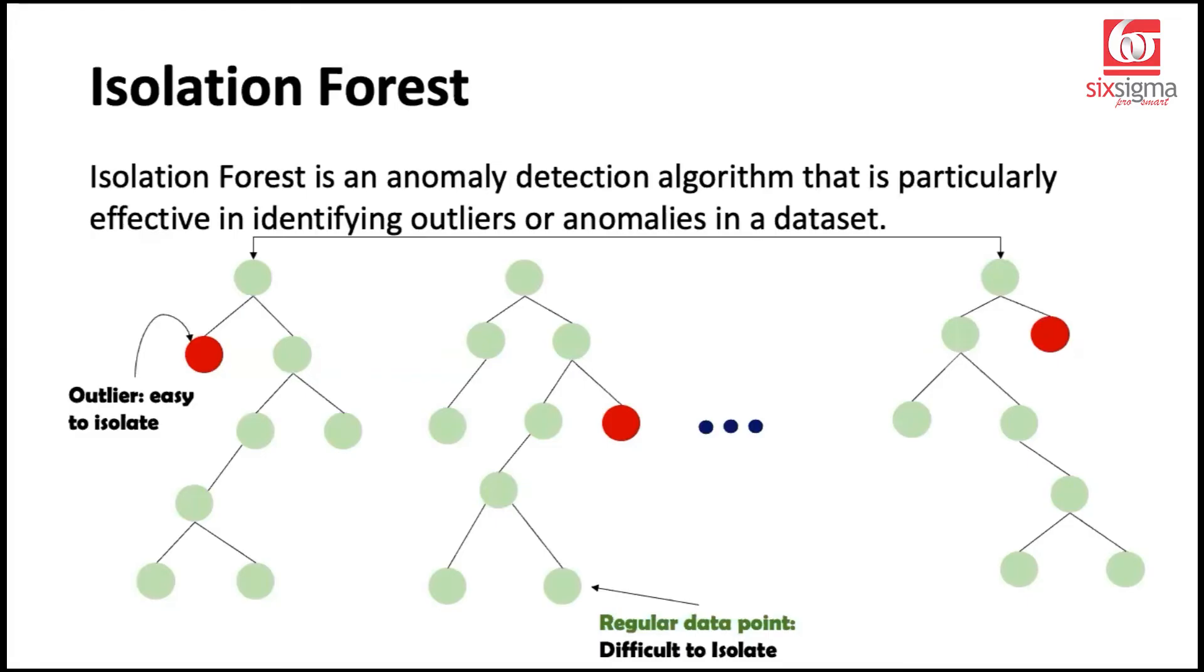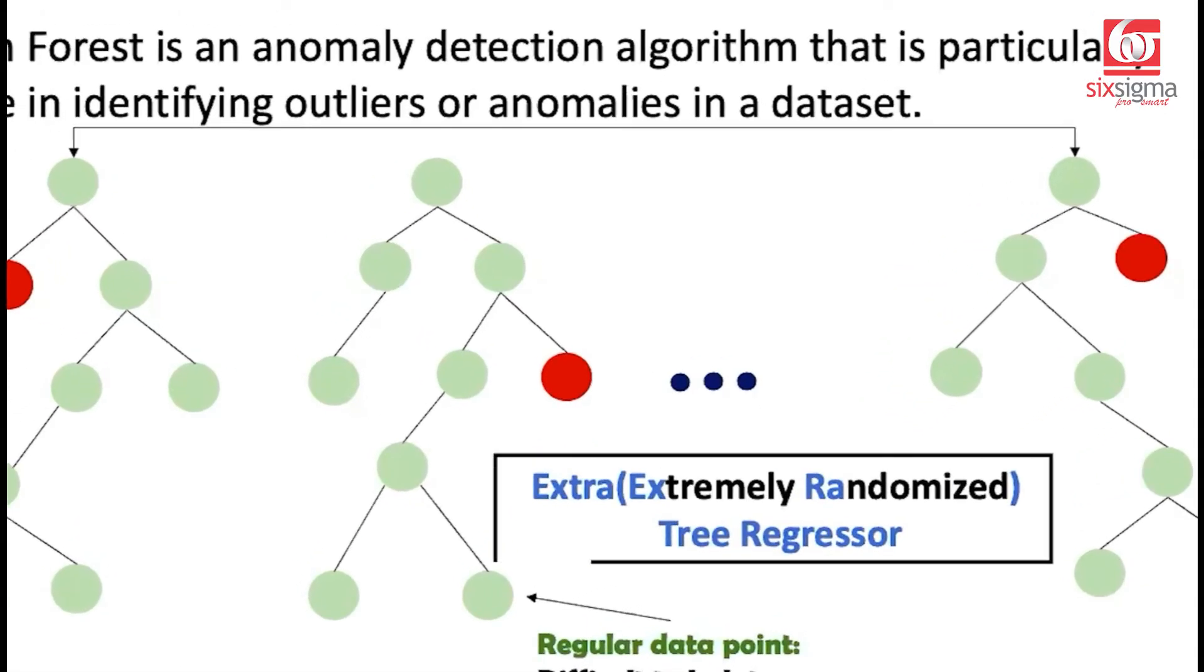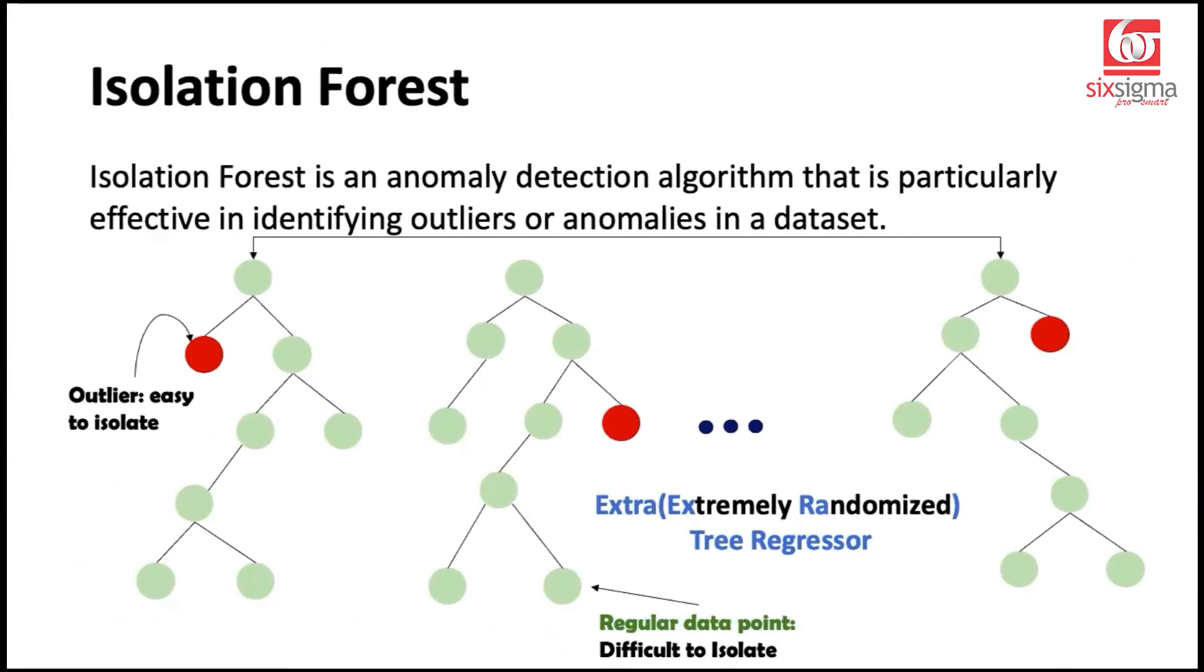Now I said there is a subtle difference between the kind of trees that you see here and the typical decision trees. The tree that we use in case of isolation forest is known as the extra tree regressor. Extra here stands for extremely randomized. Just as in case of a normal decision tree, we use entropy or a Gini gain to decide the nodes on which we want to do splits. In case of extremely randomized trees, we do these splits by choosing the nodes randomly. And that's why the position of the same observation might vary from tree to tree.